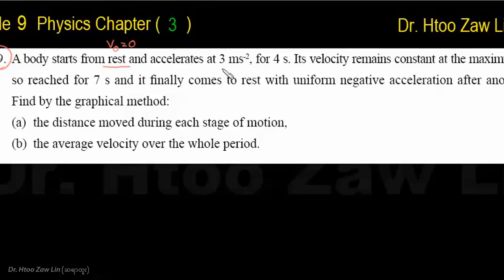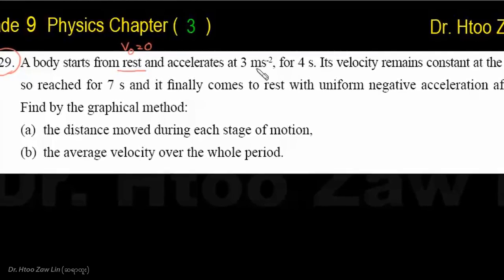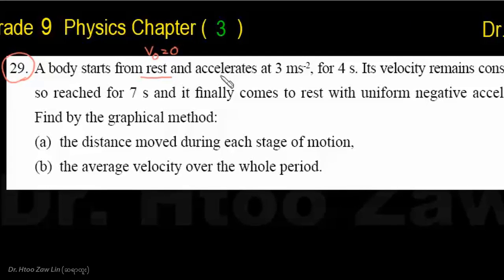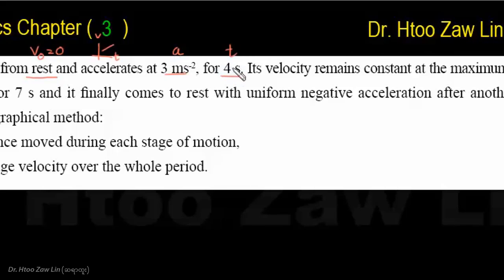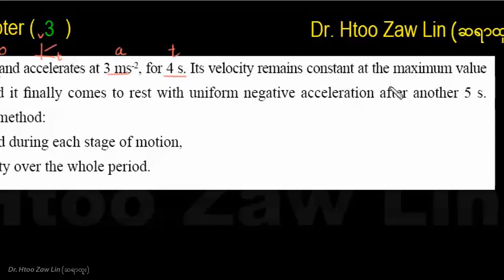In a velocity-time (VT) graph, acceleration is represented. The chain of motion includes an accelerated phase. After acceleration, a dot time taken is noted, and in the second phase, velocity remains constant.